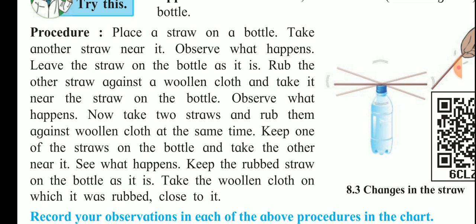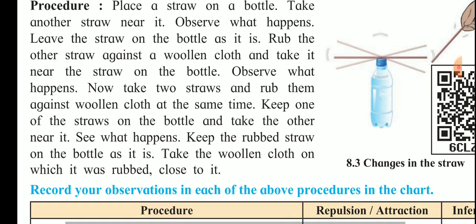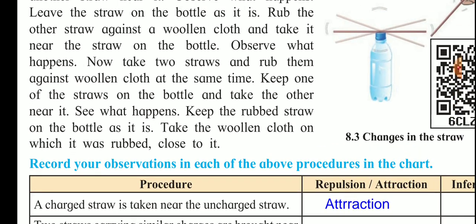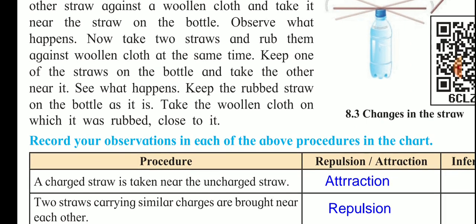Now take two straws and rub both of them against a wooden cloth. Both straws become negatively charged. Since like charges repel each other, when you bring the two negatively charged straws near each other, there is repulsion. Next, take the wooden cloth — which is positively charged — near the negatively charged straw on the bottle. Since they carry opposite charges, there is attraction.